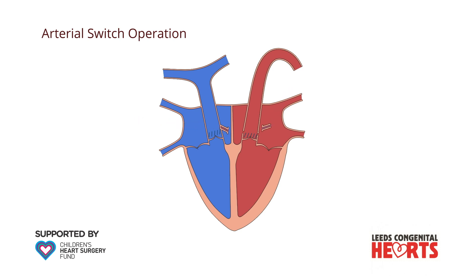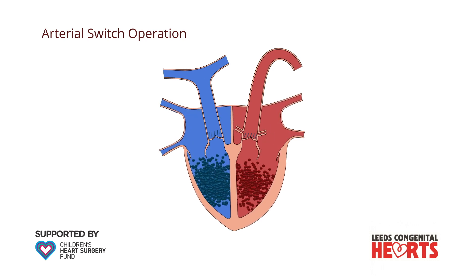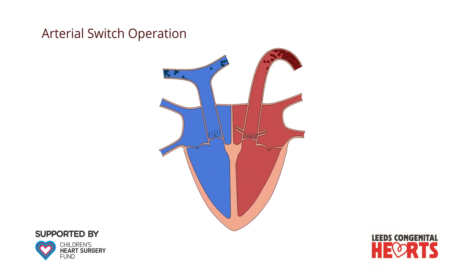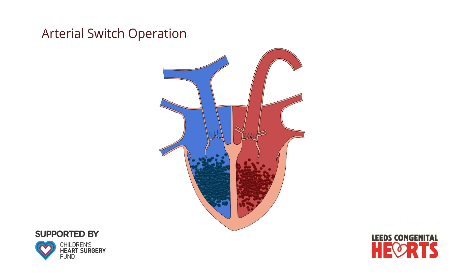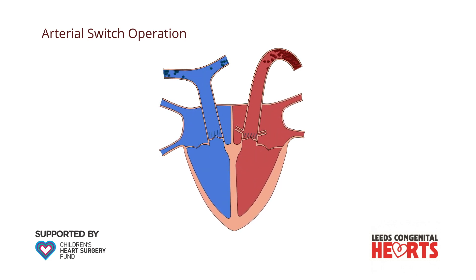The coronary arteries are then reconnected to the aorta in its new position. The arterial switch operation therefore results in a normal circulation, with oxygenated blood being pumped from the left ventricle to the body via the aorta and blood that is low in oxygen being pumped from the right ventricle to the lungs via the pulmonary artery.